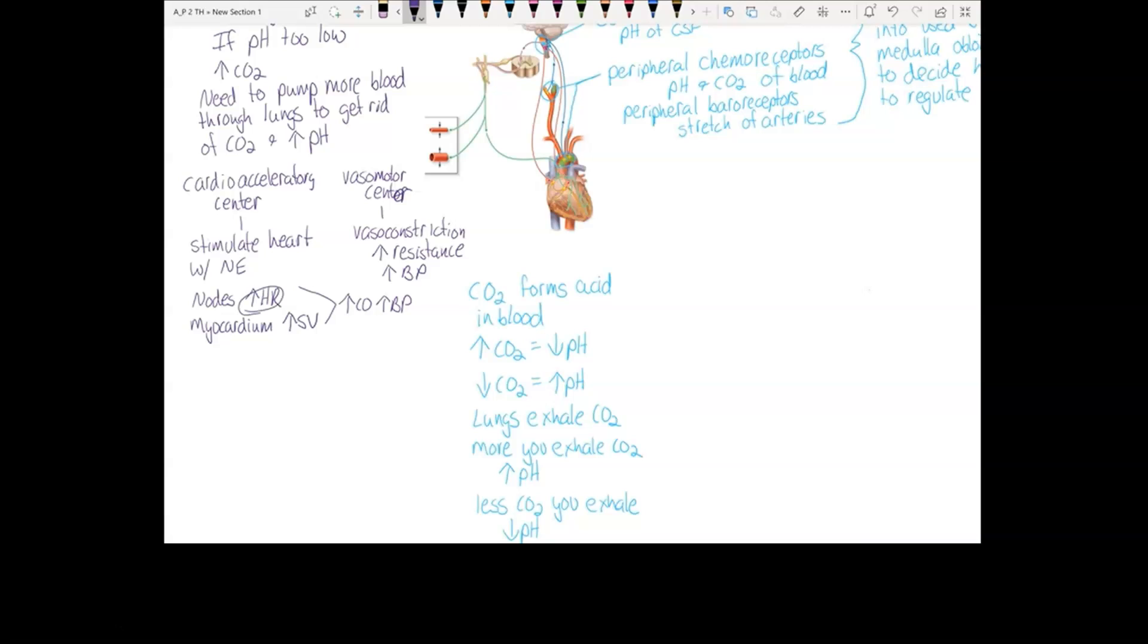You increase heart rate. You increase stroke volume. And you have vasoconstriction. This way you send more blood through the lungs and you get rid of that carbon dioxide to fix your pH.